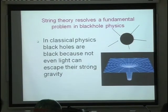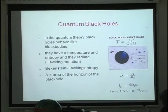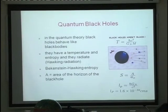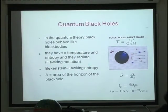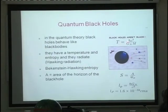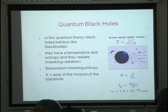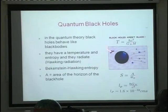Stephen Hawking discovered something astounding in the 1970s: if you apply quantum mechanics to black holes, which are solutions of general relativity, you find that black holes behave like black bodies — they radiate at you. This radiation is given precisely by a certain temperature, which goes to zero if Planck's constant is zero. If quantum mechanics is valid, you really get an object at a certain finite temperature.